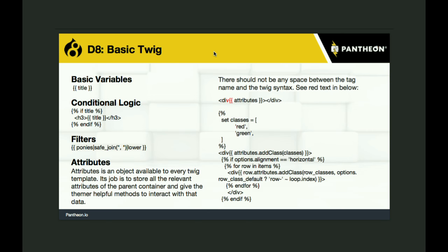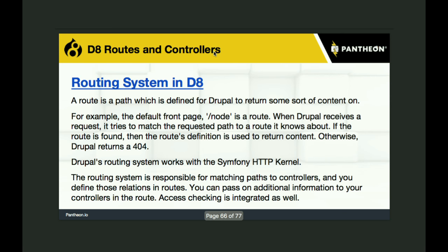A quick look at Twig and how variables are output — they're inside double braces. How conditional logic looks, filters, attributes, and importantly when you put a variable in the middle of HTML, you don't leave a space around the braces. They're supposed to touch and be continuous.